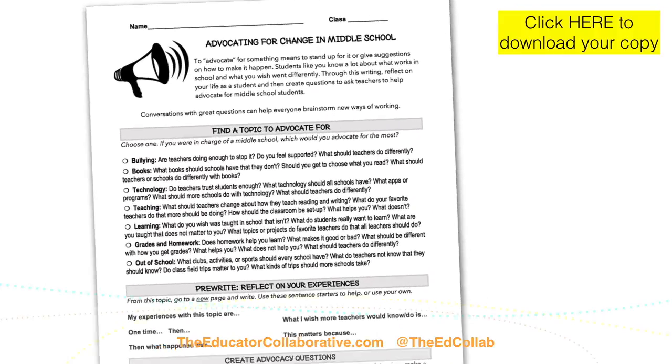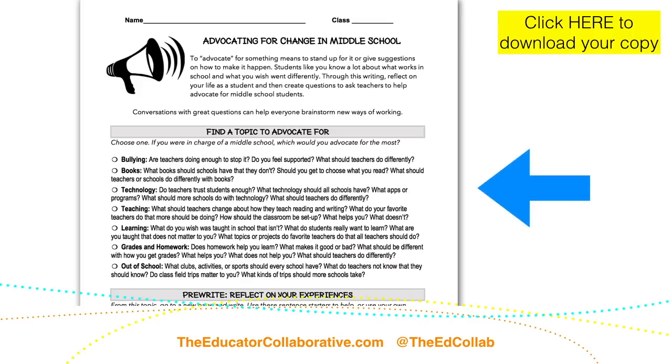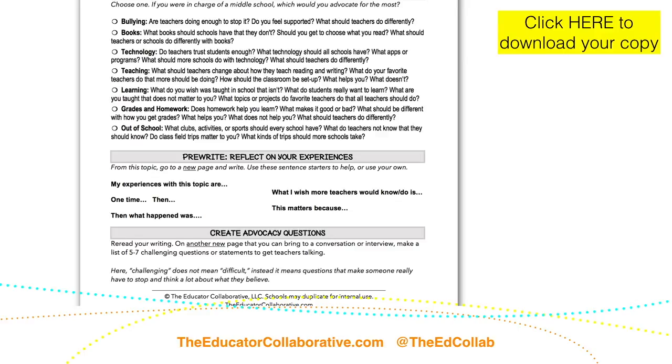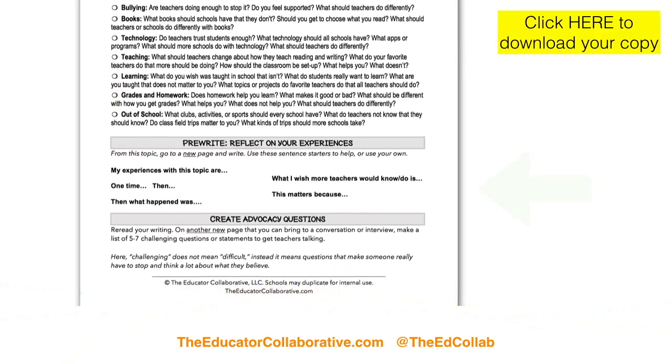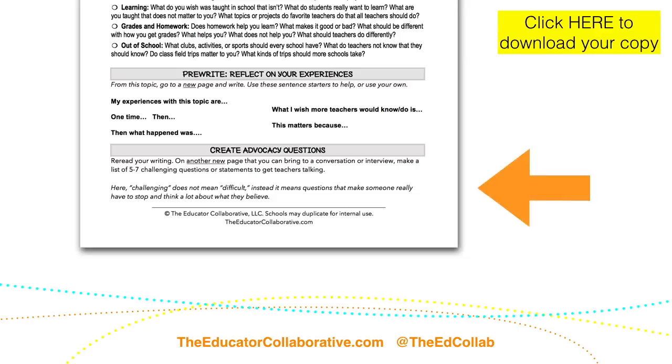Instead, it's a guide for three big steps that Roz and I are going to demonstrate right now for this advocacy project. The steps are: you'll find a topic, then you'll do some pre-writing to reflect on your experiences and make some decisions about what you'd like to do, and then the last step is to create advocacy questions. Our goal is that you leave with some questions you could use in a conversation with teachers to help them think about the things you care about as a middle school student and invite them to do some problem solving with you, because as middle school students, you know what works for your learning and your school.